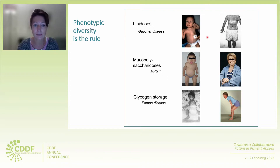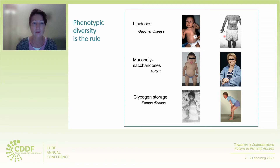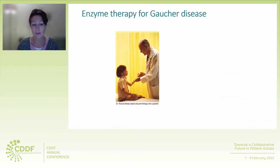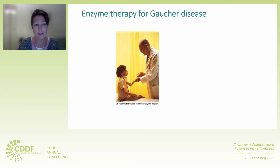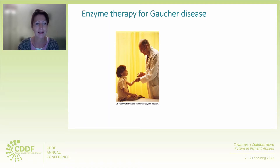For example, Gaucher disease: you can see a very severely affected child, but also a nearly asymptomatic octogenarian. The same holds true for almost all of the lysosomal storage disorders. I'm telling you this because it's important if you want to develop a treatment strategy — here shown as the first one for Gaucher disease. One of the enzymes defective there is glucocerebrosidase. You see here Professor Roscoe Brady, who discovered the enzyme defect in the 1960s and also helped develop the enzyme replacement therapies, injecting a child with the enzyme.